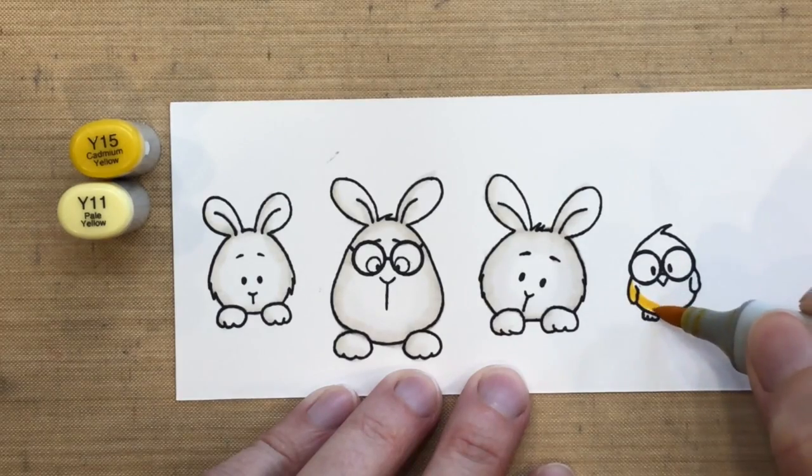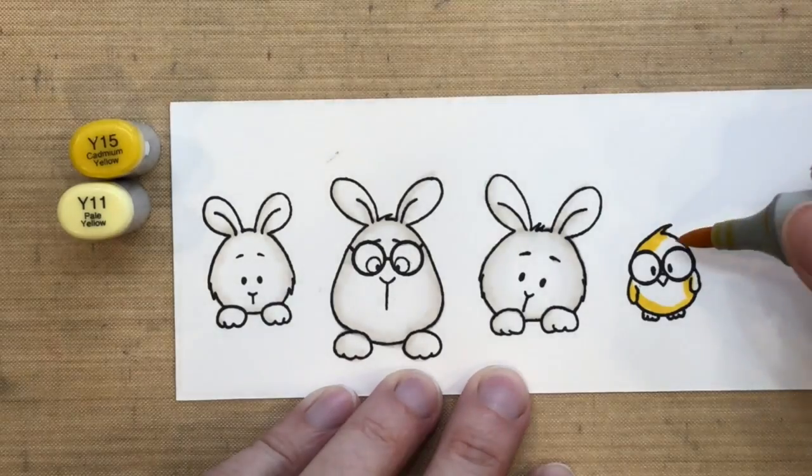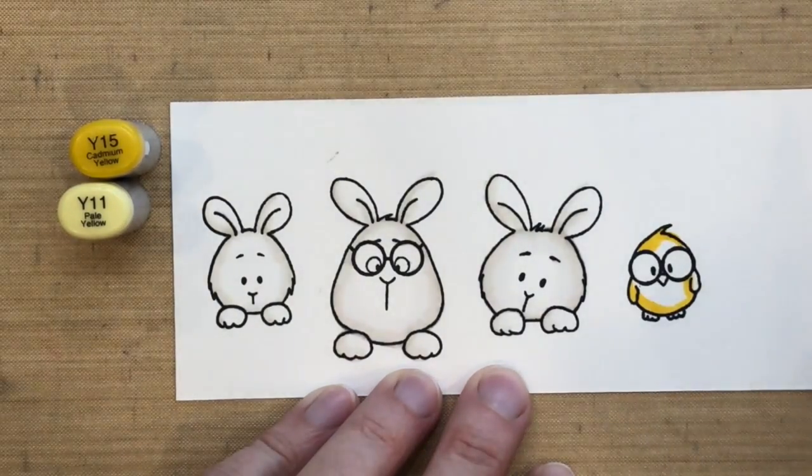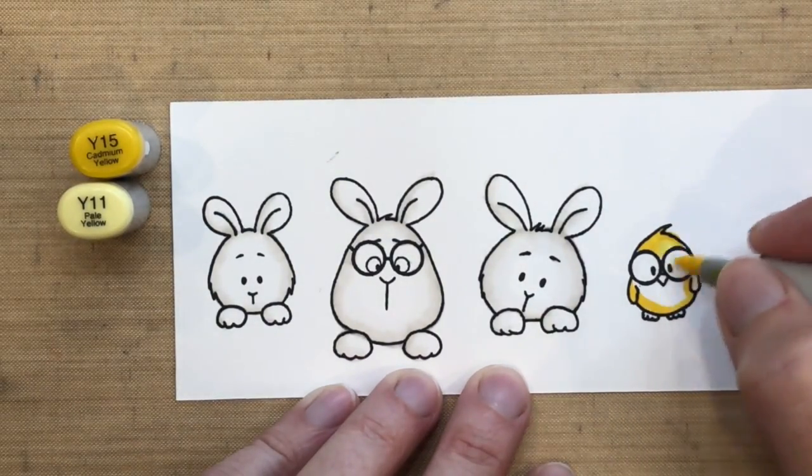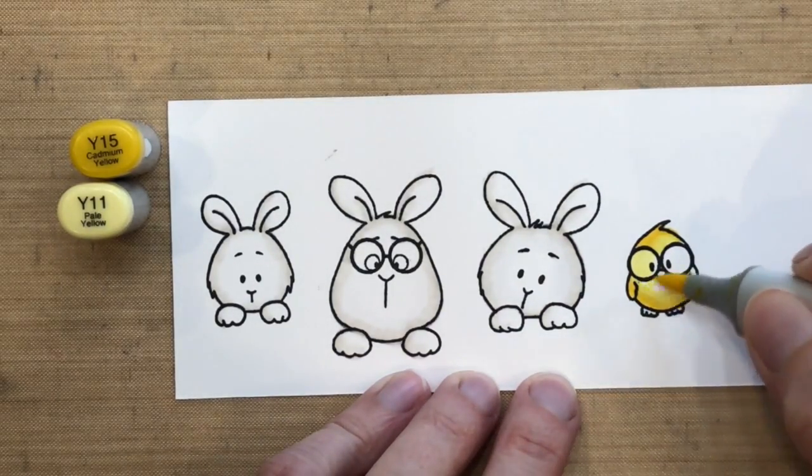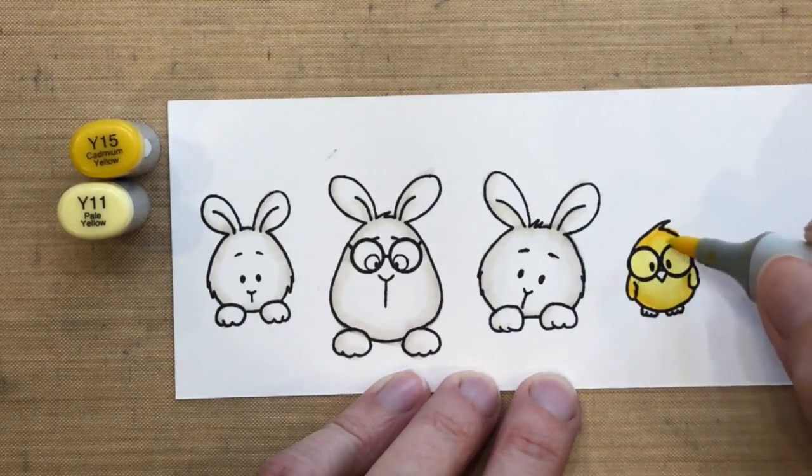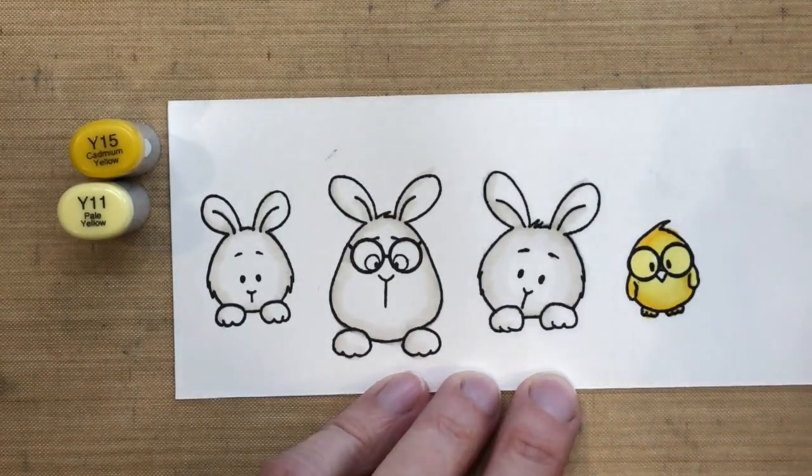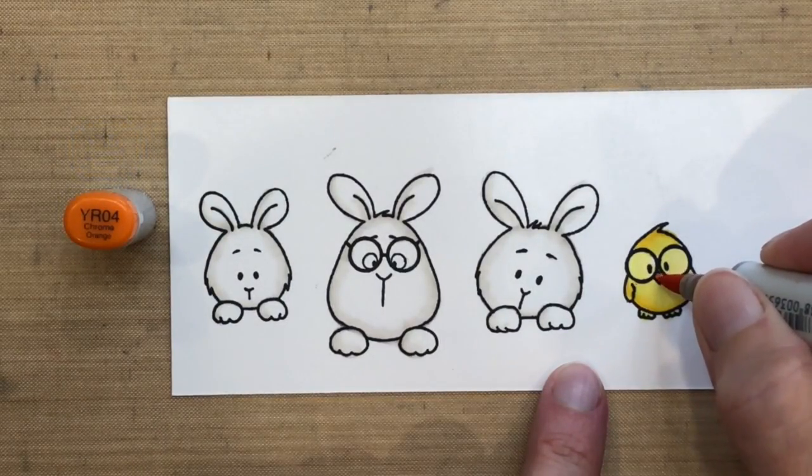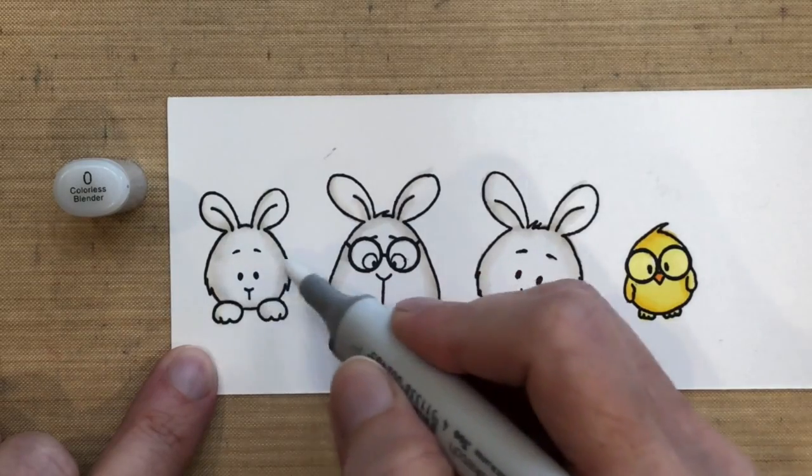My two favorite yellows - Y15 just kind of around the edge, just like I did with the bunnies. And then I'm going to take my Y11 and I'm going to color over the whole thing. The first time I did this I left the glasses white, and then the second time I made them yellow, and I think it's probably better to go ahead and color them in because otherwise it looks like big giant eyeballs. And then I just have YR04 for the beak.